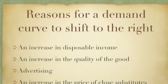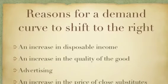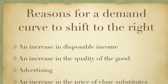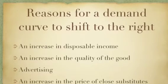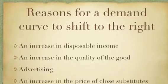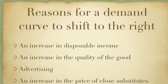So what causes a demand curve to shift to the right? Well the first reason is an increase in disposable income. If people have more money they will probably be more likely to buy the good, because they have got more disposable income to set aside to buy it.